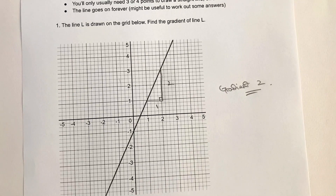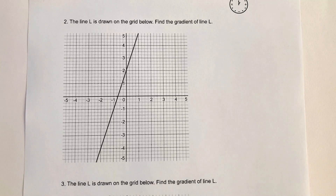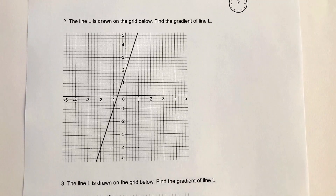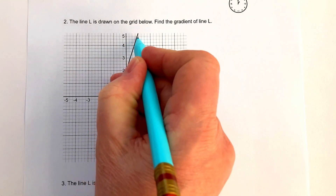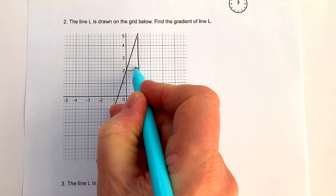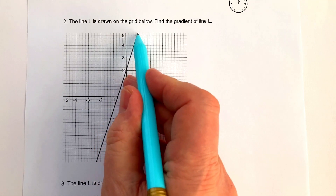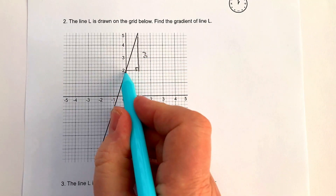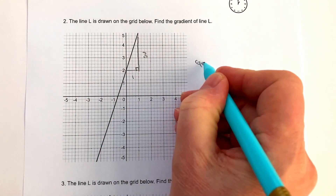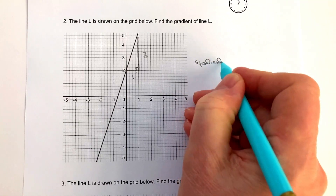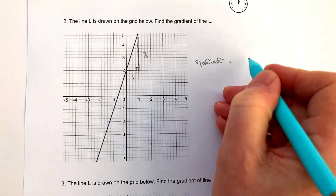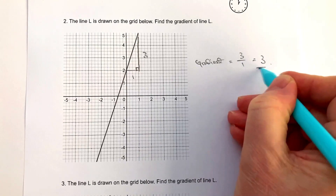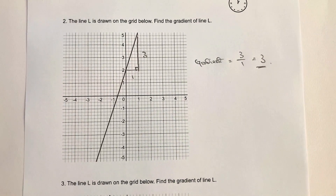Okay, so let's move on to question number two. Please do stop the video and have a go at this particular question. It's very similar in that all we need to do is create ourselves a little right-angle triangle. The difference in the y coordinates — the difference between five and two — is going to be three. The difference in the x coordinates is going to be one. So the gradient, which is the difference in y divided by the difference in x, is three over one, which equals three. That's the answer to question number two.